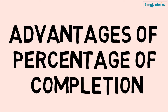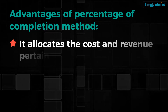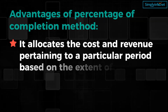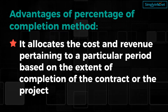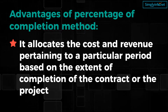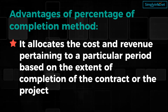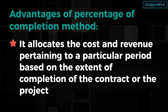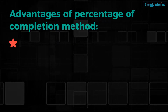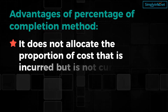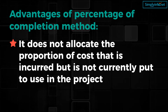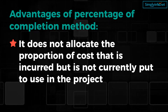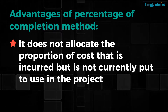Advantages of Percentage of Completion Method: It allocates the cost and revenue pertaining to a particular period based on the extent of completion of the contract or project, and there is no need to wait until the project is completed to recognize the costs and revenue incurred during the contract. It does not allocate the proportion of cost that is incurred but not currently put to use in the project. Hence, it gives a more realistic estimate of the cost and revenue of the project, and there are some tax benefits for this method.